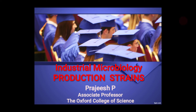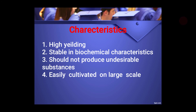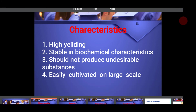Many fermented products we use will be applied in eukaryotic tissues, so the production strain should not produce any toxic or undesirable substances that will harm whatever is going to consume it. Another important characteristic is that it should be easily cultivated at large scale — whether a pilot fermenter or large-scale fermenter. So to summarize: it should be high-yielding, stable in biochemical characteristics, not produce undesirable substances, and be easily cultivated at large scale.